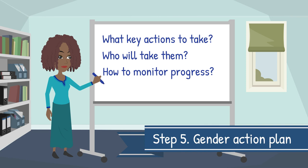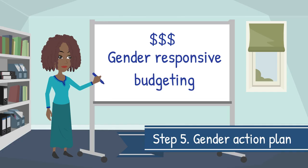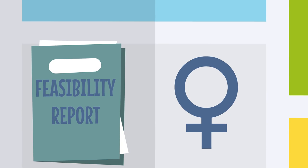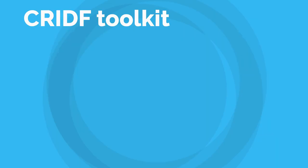This process is called gender-responsive budgeting. Using this approach, you will be able to produce a feasibility report where gender is more than just a separate section. Instead, it forms an integral part of the project preparation process and influences the final design. Following the steps in CRIDF's toolkit makes all of this easier, right from the first day of planning.